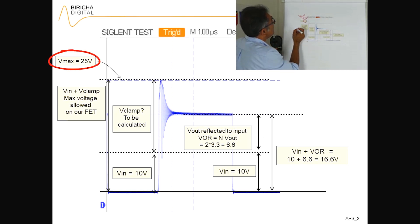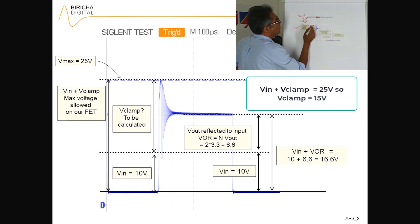Then let's say that you have got a 30 volt FET, and therefore you want the clamp at 25 volts. So the VIN which is 10 volts plus the V-clamp has to be 25 volts, and that is this line up here.